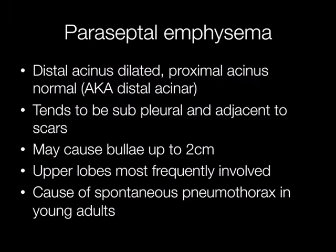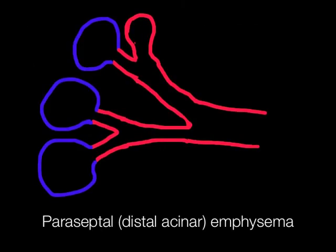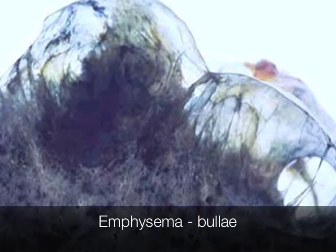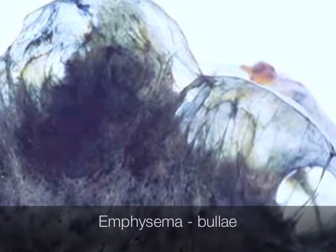In paraseptal emphysema, the distal acinus is dilated and the proximal acinus is normal, hence the term distal acinar emphysema. The emphysema tends to be subpleural and adjacent to scars, and it may form bullae up to two centimetres or more across. The upper lobes are more frequently involved, and it may present as spontaneous pneumothorax, especially in young adults. This piece of lung shows large subpleural bullae.